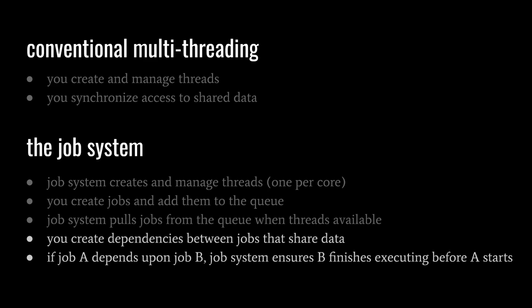A job can have multiple direct dependencies, and those dependencies can have their own dependencies, and a job will not start executing until all of its dependencies have finished. So the idea is that by splitting our workload into separate jobs and creating dependencies between them only where they're needed, we can maximize the use of the cores.